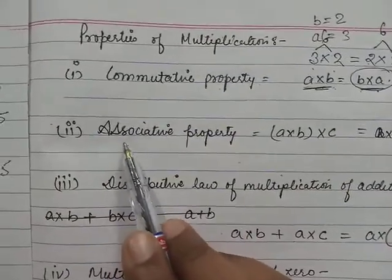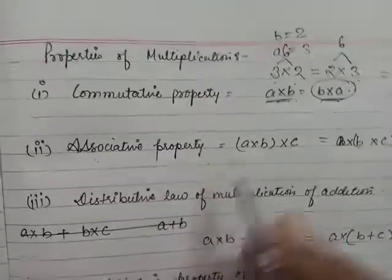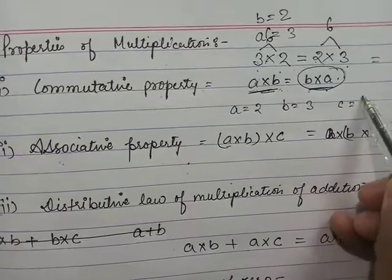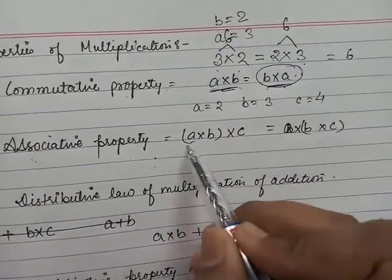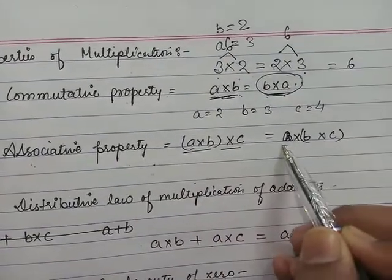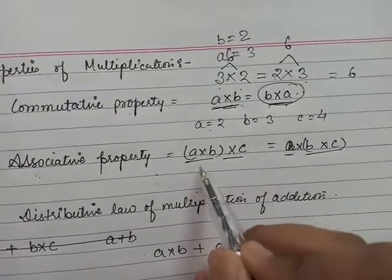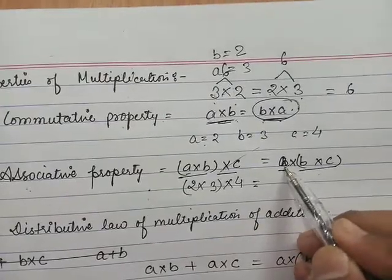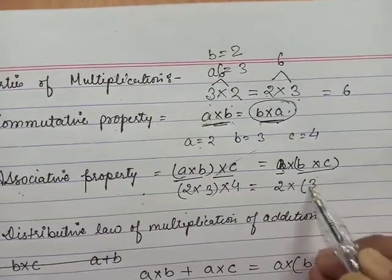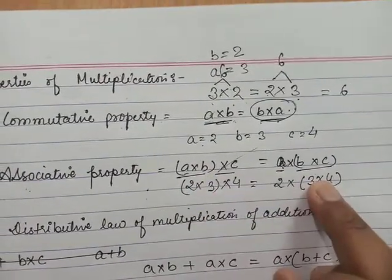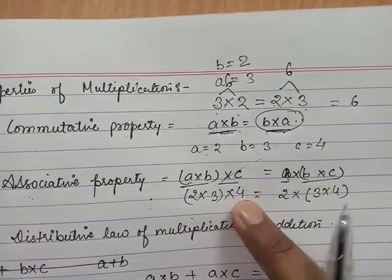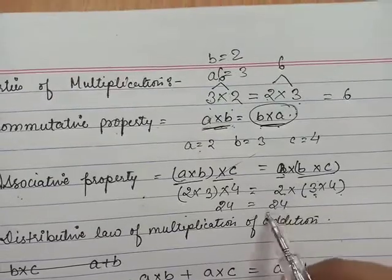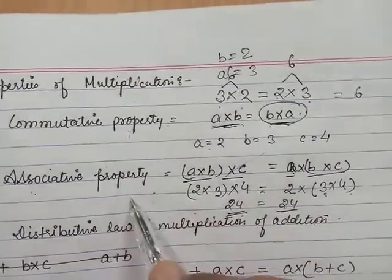Now the second property is the associative property. Suppose A is 2, B is 3, and C is 4. Then (A × B) × C equals A × (B × C). So (2 × 3) × 4: 2 × 3 is 6, and 6 × 4 is 24. On the other side, 2 × (3 × 4): 3 × 4 is 12, and 2 × 12 is also 24. Both values are equal, so this is the associative property.